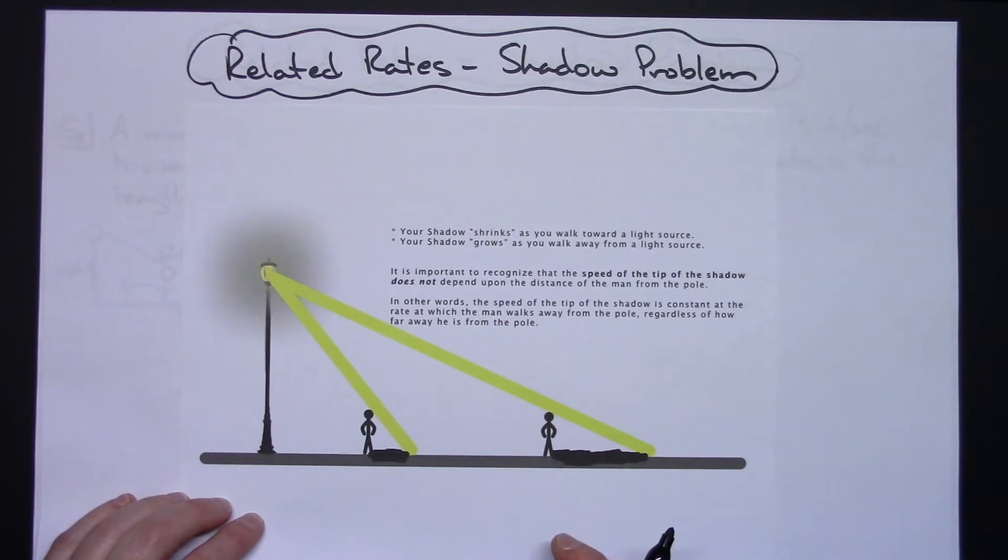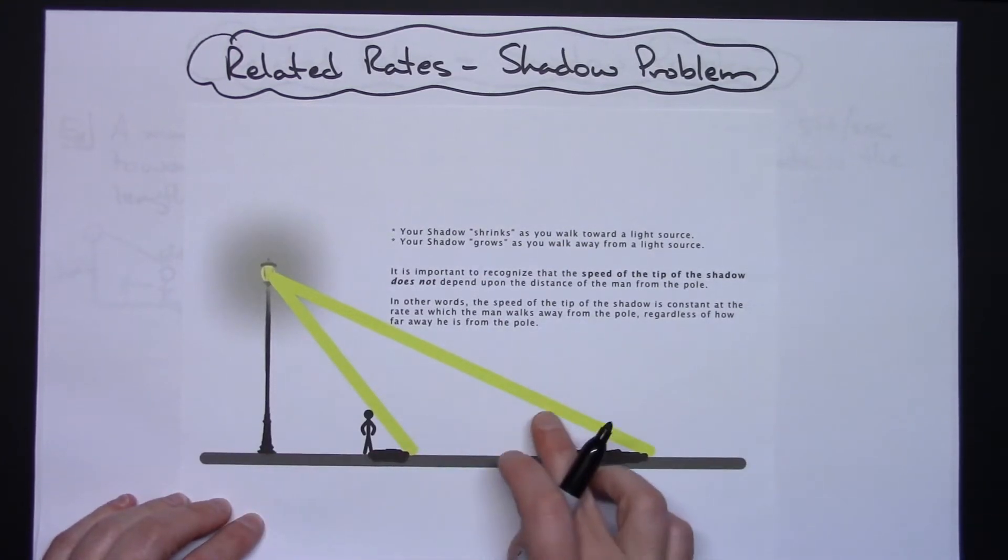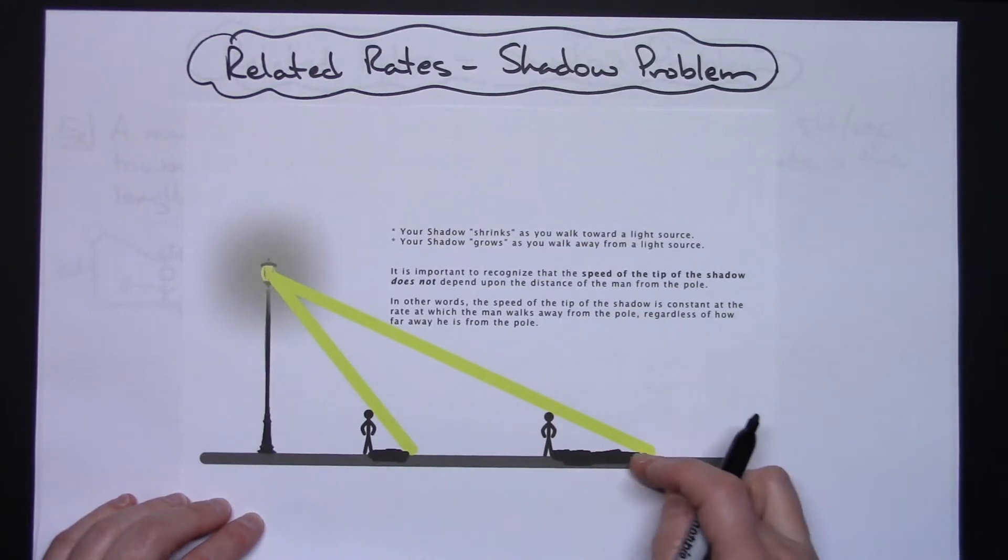Something that you need to realize is that your shadow shrinks as you walk toward a light source. Everything here is pretty proportional—this guy and this guy are the same height. Clearly you can see the beam of light coming down here and the shadow is longer here.